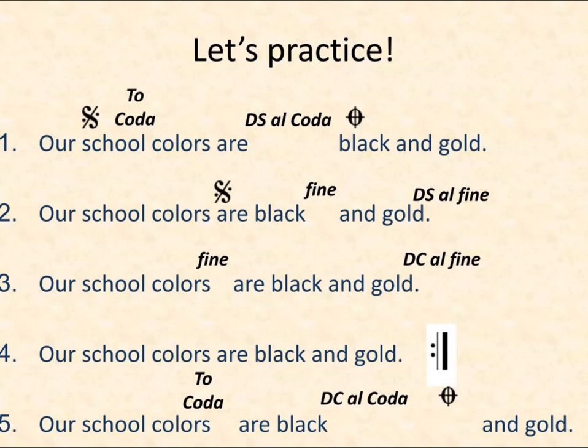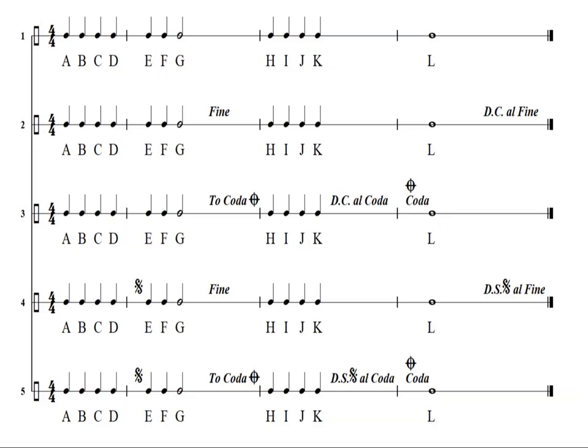Now we're going to put some sheet music up and apply it. On screen we have five lines, each with a different repeat pattern. Line one does not have any repeats or flow direction — no DC, no Al Fine, no DS, no Al Coda — just read straight across. Line one: A, B, C, D, E, F, G, H, I, J, K, L.